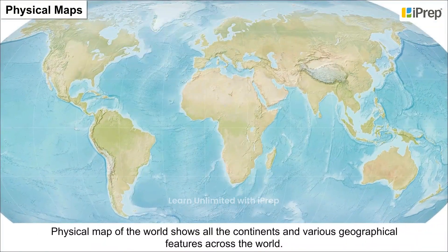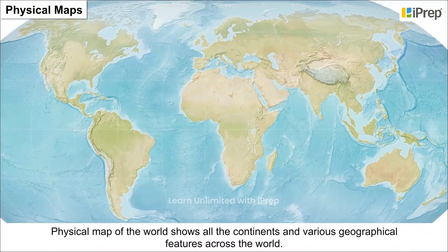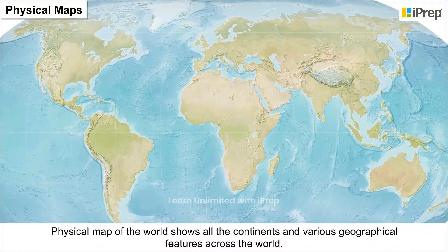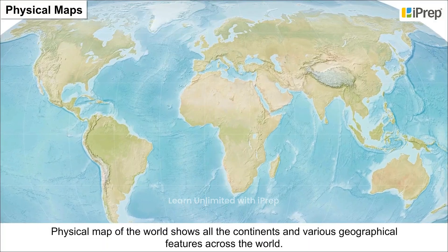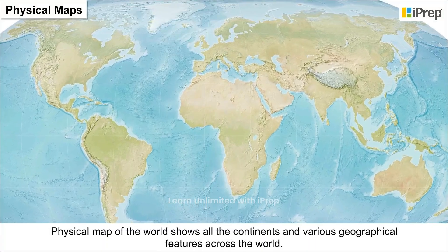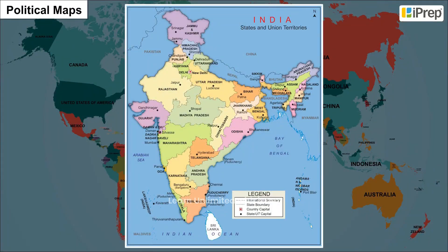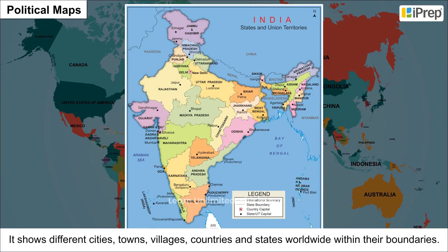The Physical Map of the World shows all the continents and various geographical features across the world. Political Maps show different cities, towns, villages, countries, and states worldwide within their boundaries.